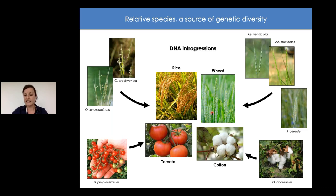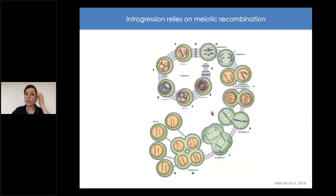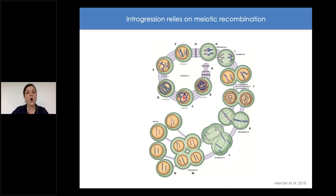The mechanism behind introgression relies on meiotic recombination. Meiosis allows the production of haploid gametes from a diploid cell. During the first stage of meiosis, chromosomes condense and homologous chromosomes — from paternal and maternal origin — must recognize each other, pair, and recombine via the formation of crossovers, which are the reciprocal exchange of large DNA fragments.